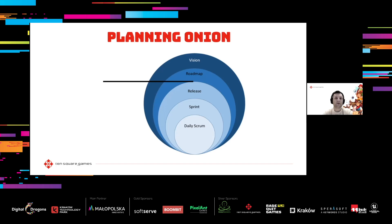There are two levels to the onion. The first one is strategy: what is our vision and how do we want to achieve it? The second level is delivery: what exactly and when are we going to build in order to walk the roadmap? Unfortunately, this is the level where most of our energy goes and where we start planning. We focus on what we're supposed to do, not on what needs to be done. We're often in this 20th century factory mentality where more work done equals better value.